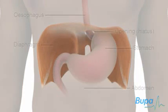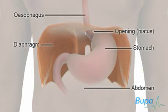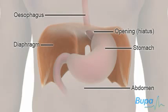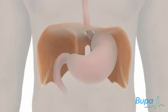Your oesophagus, the pipe that goes from your mouth to your stomach, passes into your stomach through a hole or hiatus in your diaphragm. Normally, the stomach is situated completely below the diaphragm, as shown here.